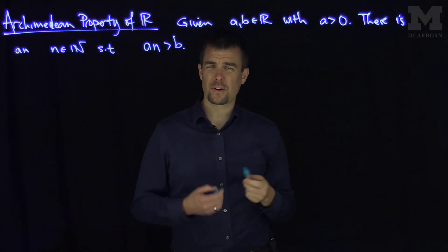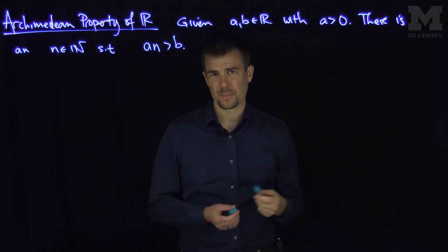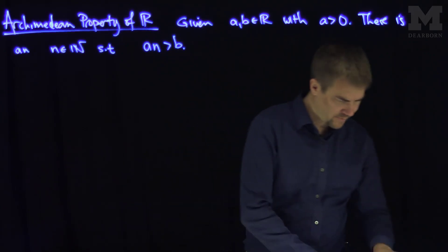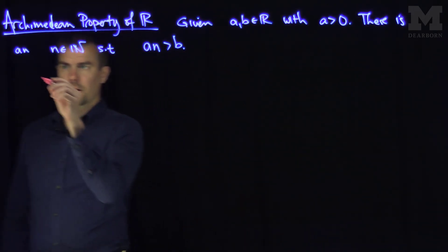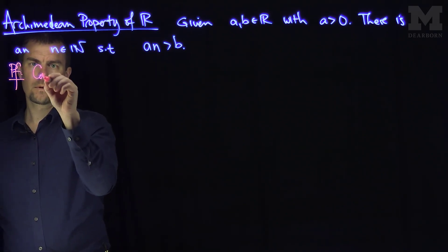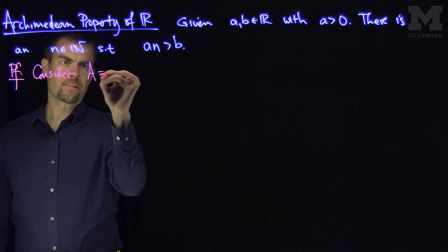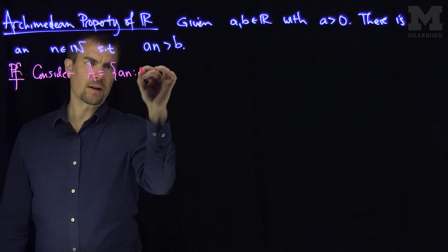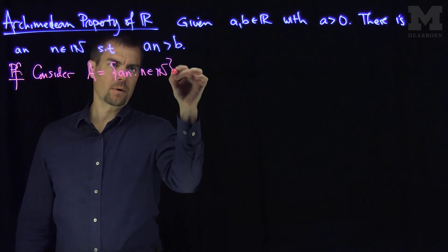Again, this is fairly straightforward intuitively, but let's prove it using the least upper bound property. So the proof goes as follows. Consider the set A which is the set of all a times n such that n is a natural number.